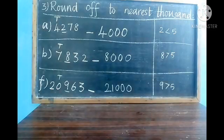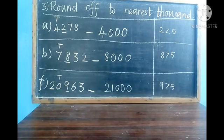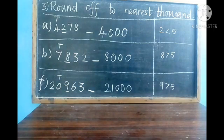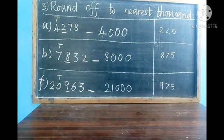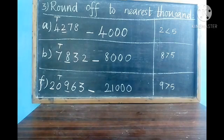B equals: in the hundreds place value 8 is there. 8 is greater than 5, so we write the next thousand. The next thousand of 7000 is 8000. F equals: in the hundreds place, 9 is there. 9 is greater than 5.